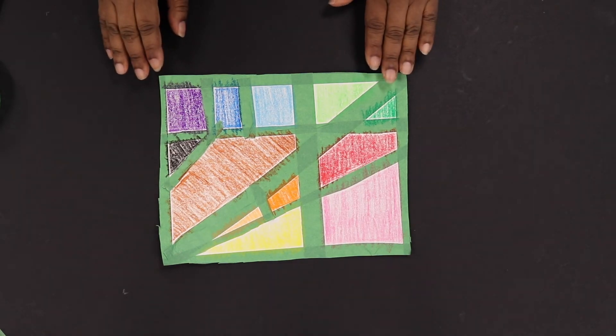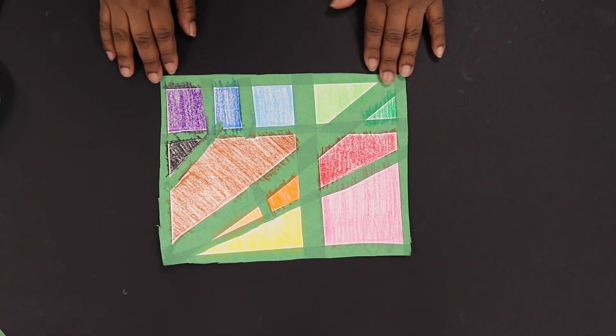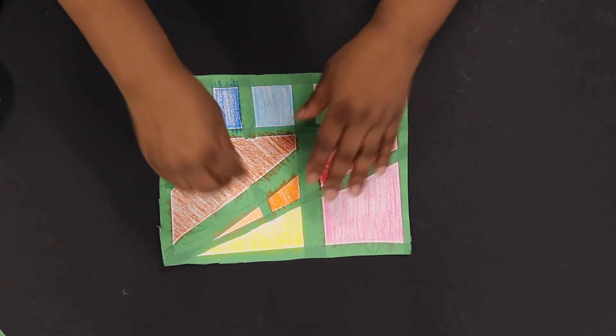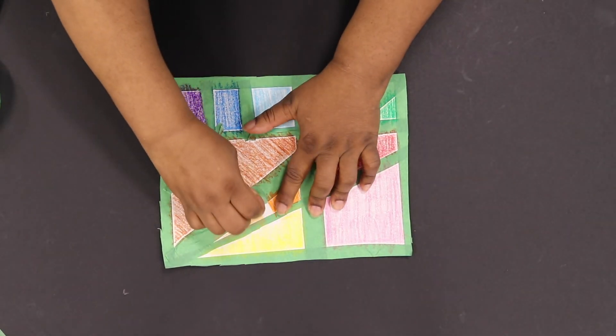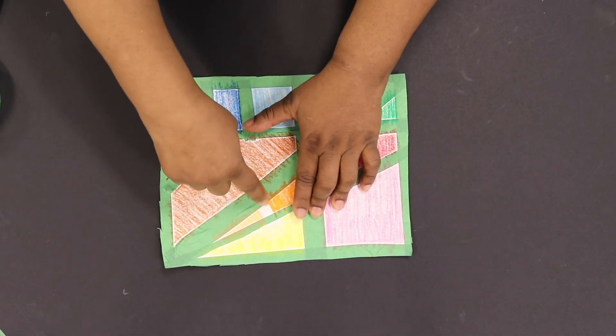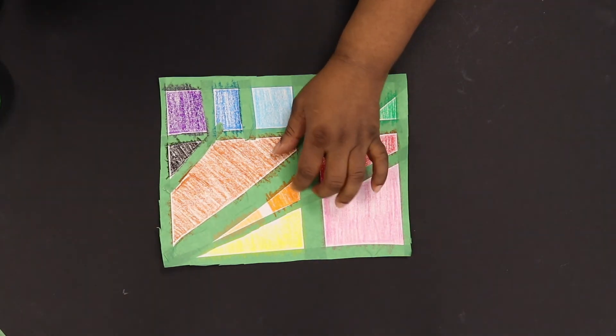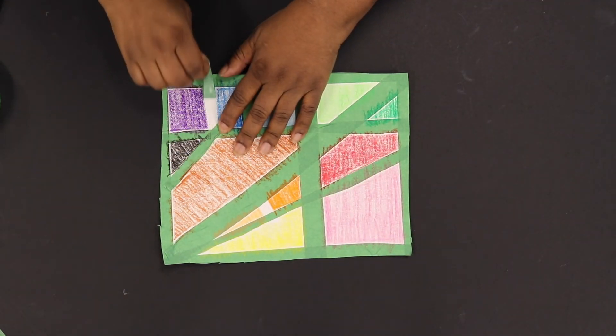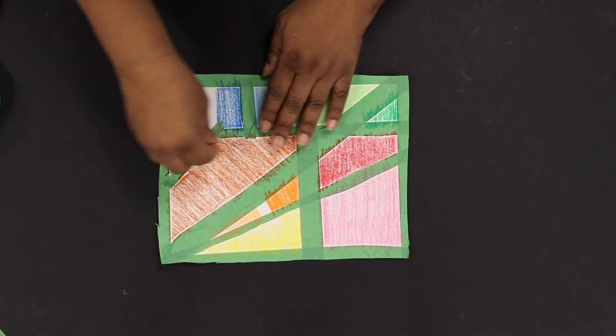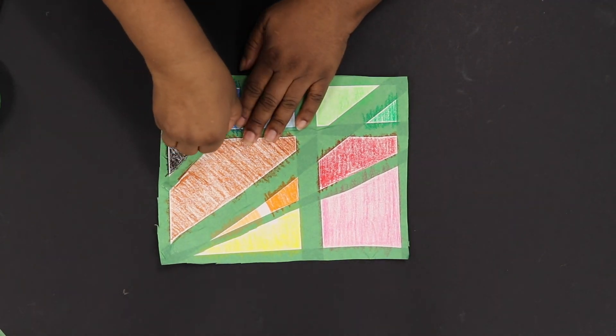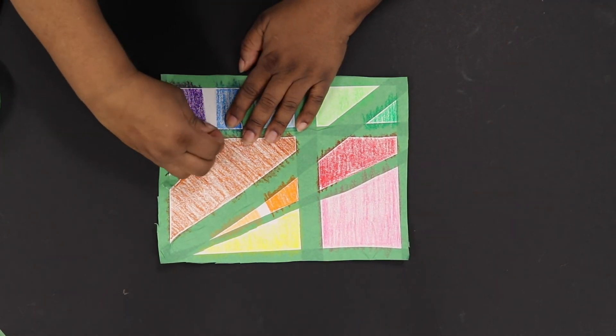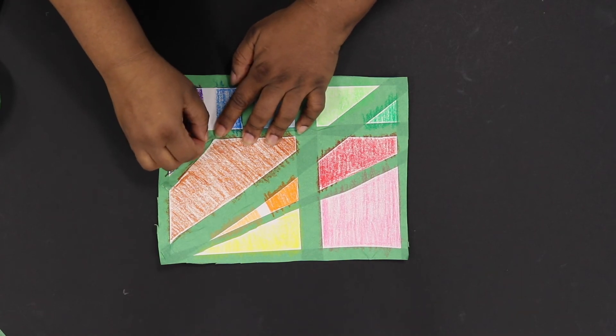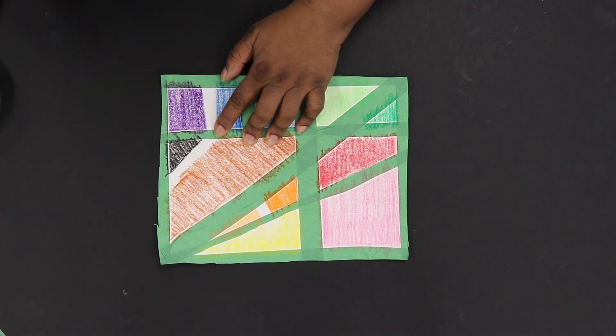Now that we're finished coloring, we get to peel off the tape. I'm going to peel off this little one first. There's a line right there. And here's a line. I suggest peeling off the inside tapes before you do the border.